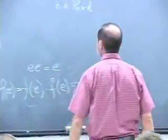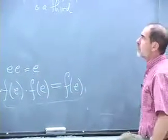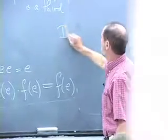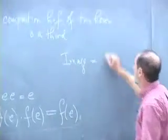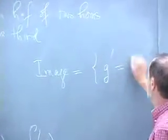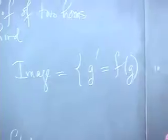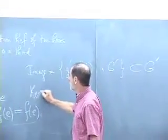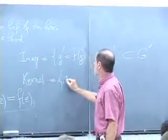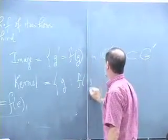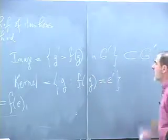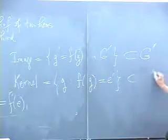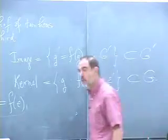Some important subgroups associated to a homomorphism: you have the image, which is the set of elements of G prime which are equal to f of g for some g in G. So they're the things that are hit by the homomorphism, and that's a subset of G prime. And you have what's called the kernel — for those of you who've done vector spaces, you know this sort of thing — that's the set of g such that f of g is the identity element in G prime. That's a subgroup, a subset of G, just like you have the kernel and image of a homomorphism of vector spaces.